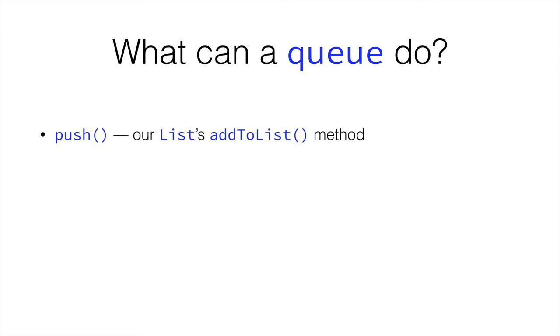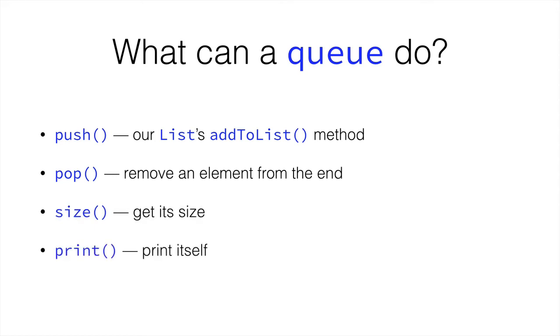So push is going to be our list's add to list method that adds at the beginning, and pop is going to remove an element from the end. Instead of push adding at the end and pop removing from the beginning, we're going to make push add at the beginning and pop remove from the end. Then size is going to get the size and print is going to print the queue. So these are going to be our four methods in the queue class.